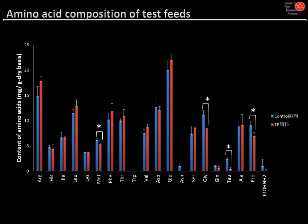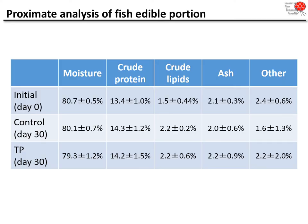This is very important because if we used soybean protein, the amino acid profile would be quite different from fish meal. With thraustochytrid LER-TP, we successfully prepared a fish meal replacement diet with a comparable amino acid profile. This shows the proximate analysis of the edible fish portion after the rearing experiment. Results are shown for day zero, and for control and TP groups at day 30, for moisture, protein, lipid, ash, and other components.